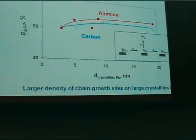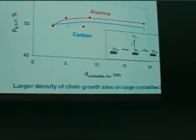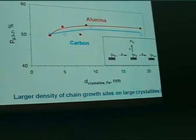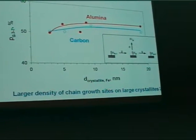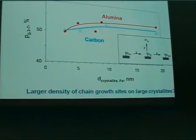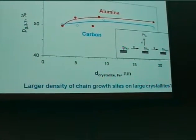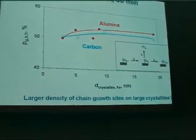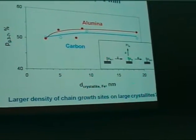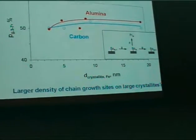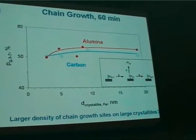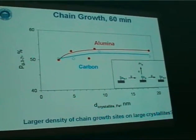An increase of chain growth probability and a decrease of methane selectivity in iron-based Fischer-Tropsch synthesis is often associated with effects of potassium promotion. In our study we kept the amount of potassium promotion constant. However, in doing so, with an increase of crystallite size we are effectively increasing the potassium-to-metal surface area ratio. Therefore, what we're seeing here might in fact also be due to effects of increasing potassium promotion.